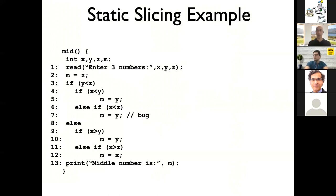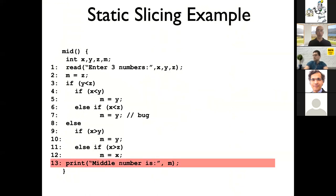For the sake of the example, we have an annotation marking the bug — normally you don't have that in the code. Looking at this code, if you think about how slicing works, you start from line 13, which is where the manifestation of the problem is — where a wrong computation will produce a wrong printed result. At that point, you follow what are called data and control dependencies.